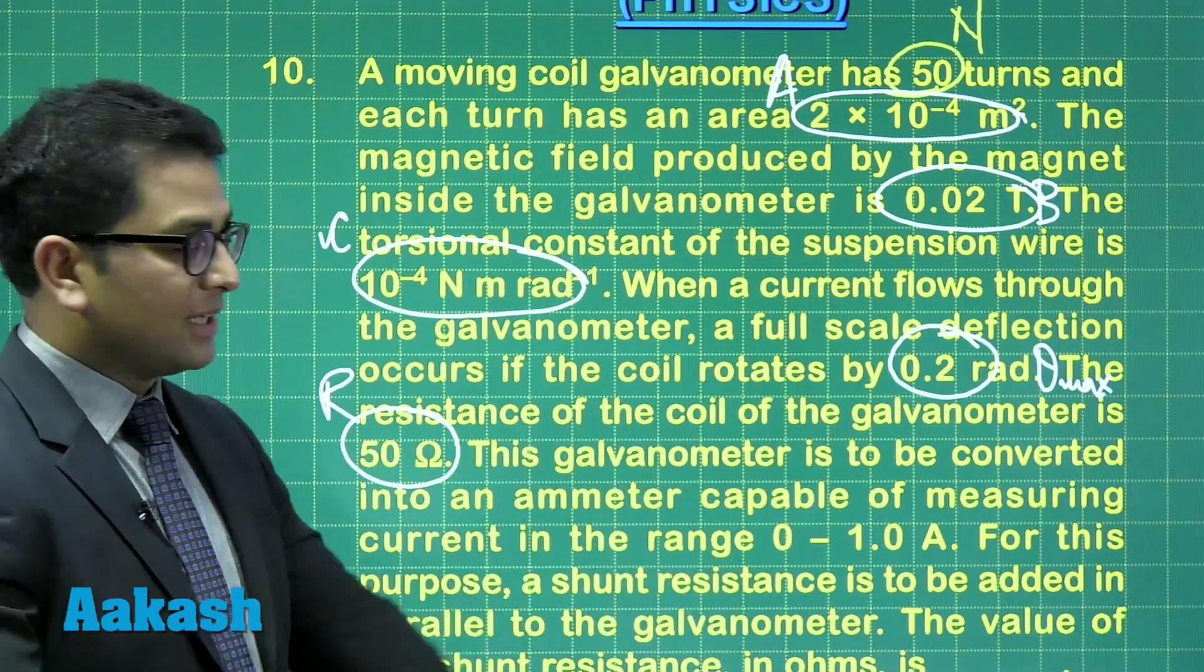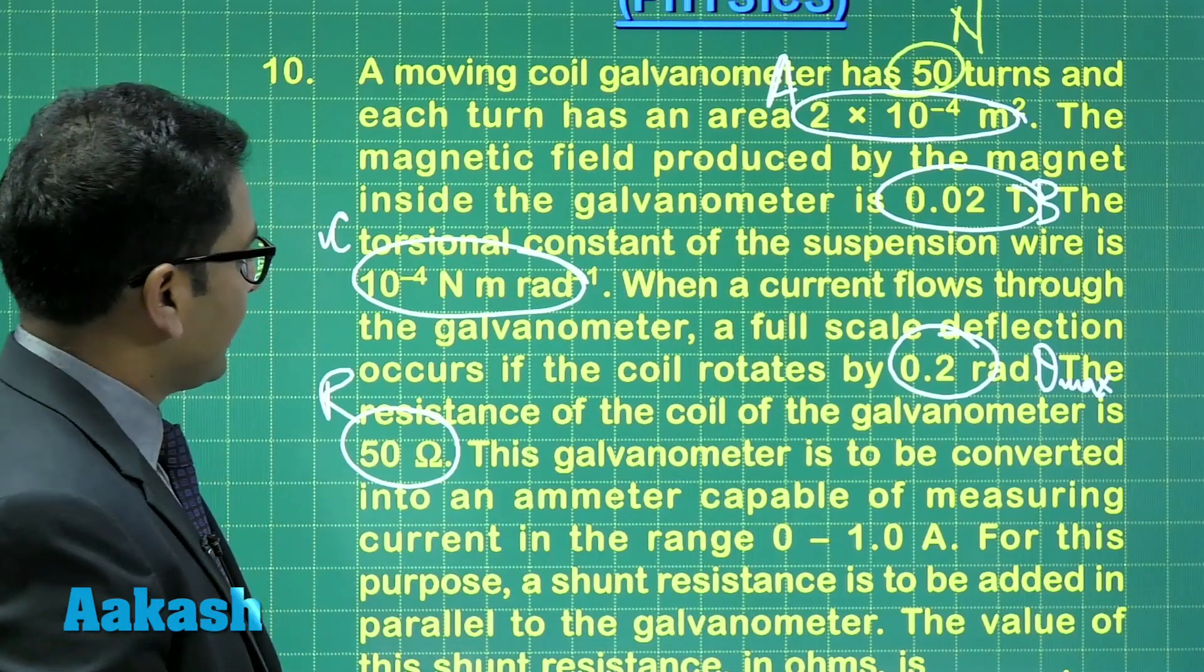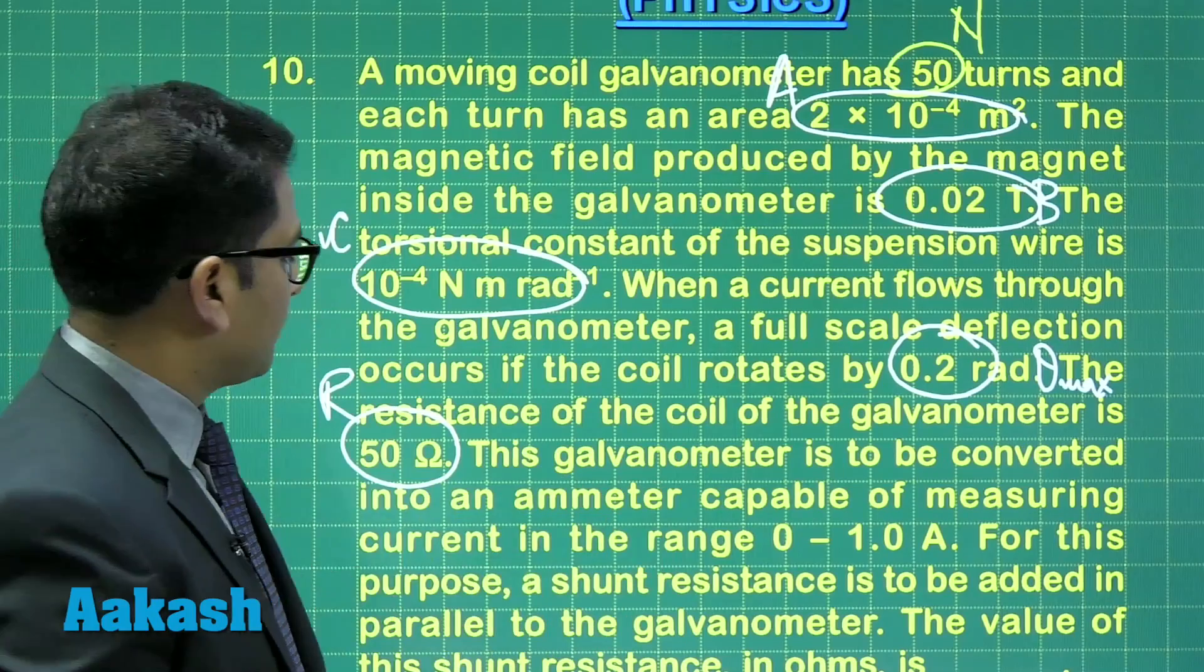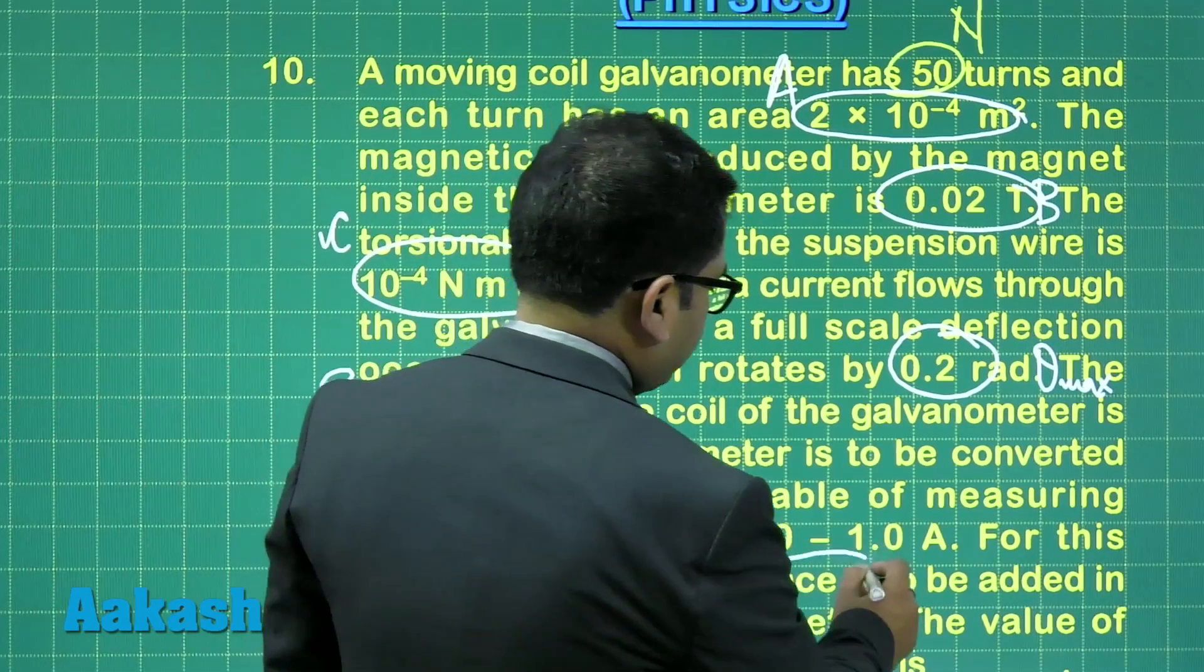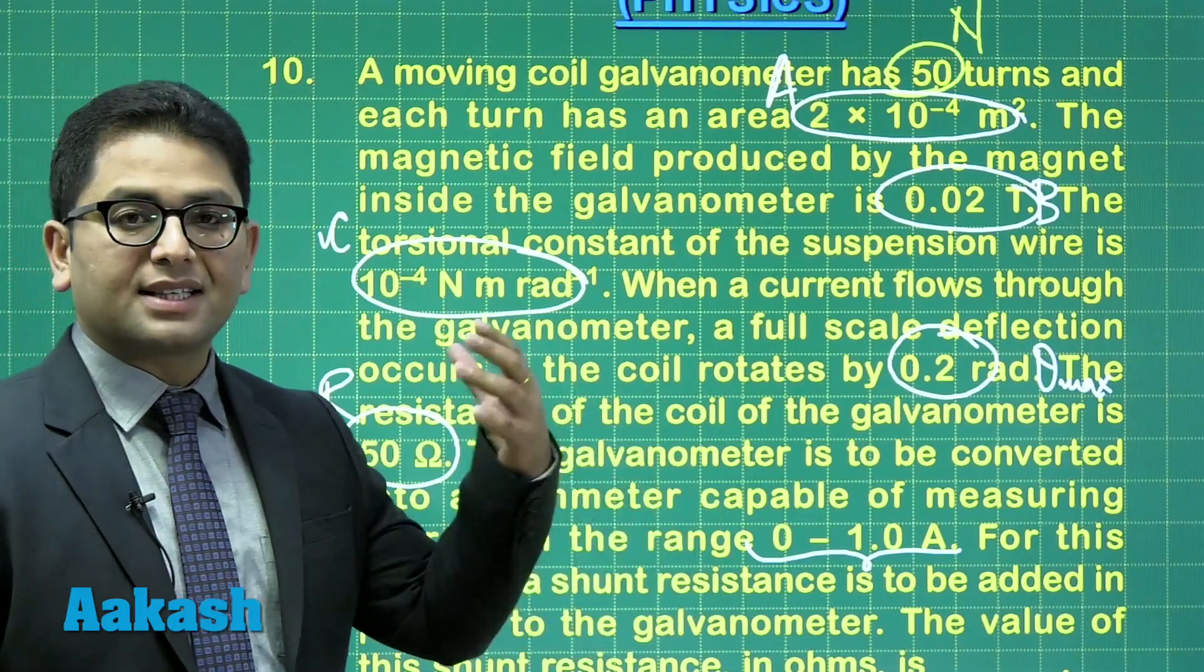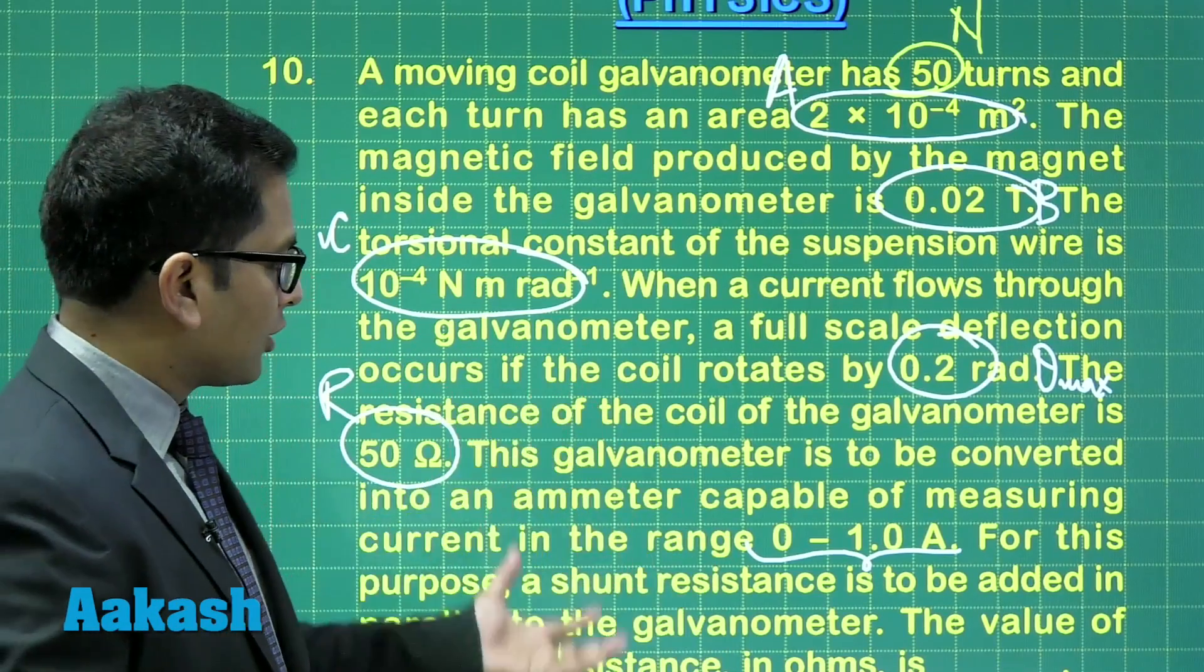This galvanometer is to be converted into an ammeter capable of measuring current in the range of 0 to 1 ampere. That means we need to convert this galvanometer into a higher order ammeter, and we know for this a shunt has to be connected in parallel.